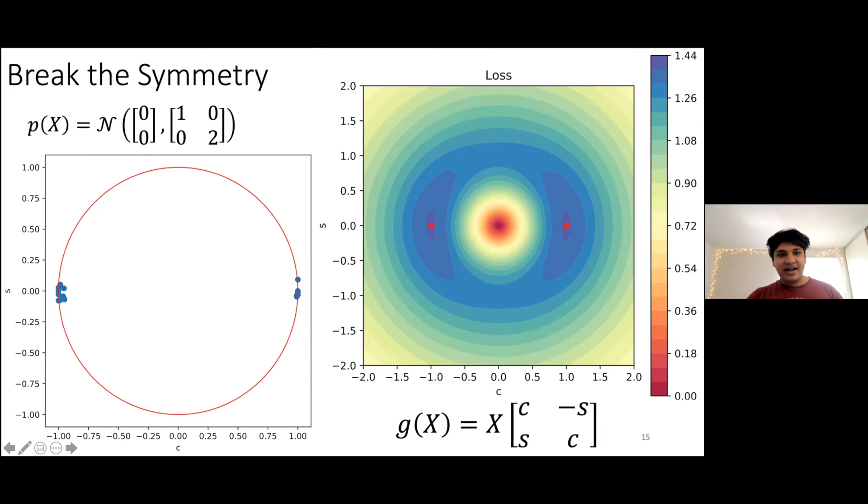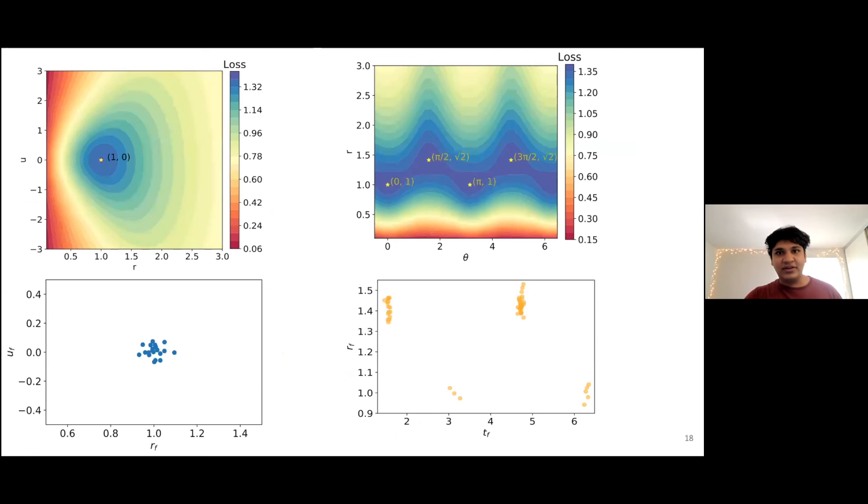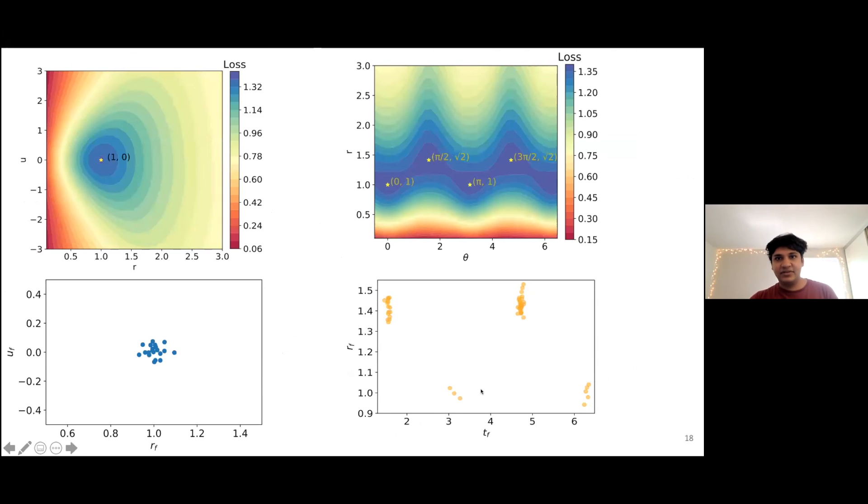However, there are actually more symmetries that are, as we discussed, hidden by the incomplete parametrization. So when you parametrize the two-dimensional Gaussian that has broken symmetry completely, you find these additional symmetries which involve rotating and unsquishing, essentially, or squishing in the opposite direction to reconstruct the original data distribution. So the original two that we found would be the zero, one, and the pi, one that we discussed already, but there are these two additional pi over two root two and three pi over two root two symmetries that we did not discuss so far that are found once you do parametrize all six parameters of the search space.